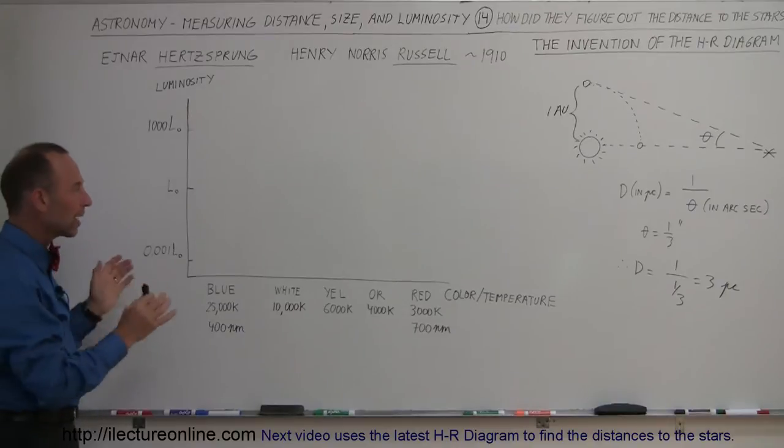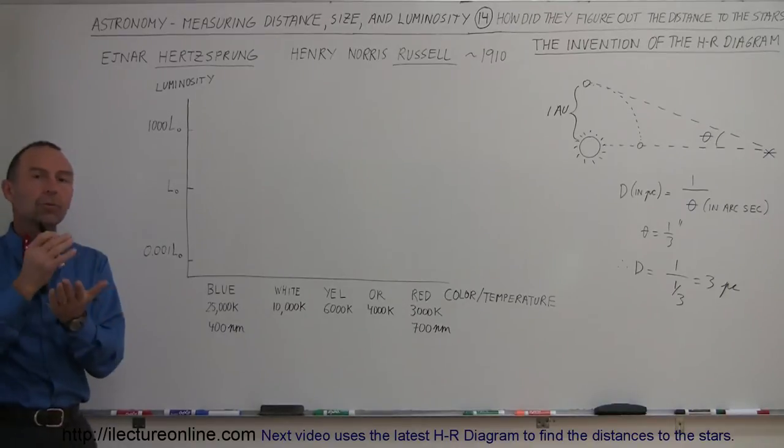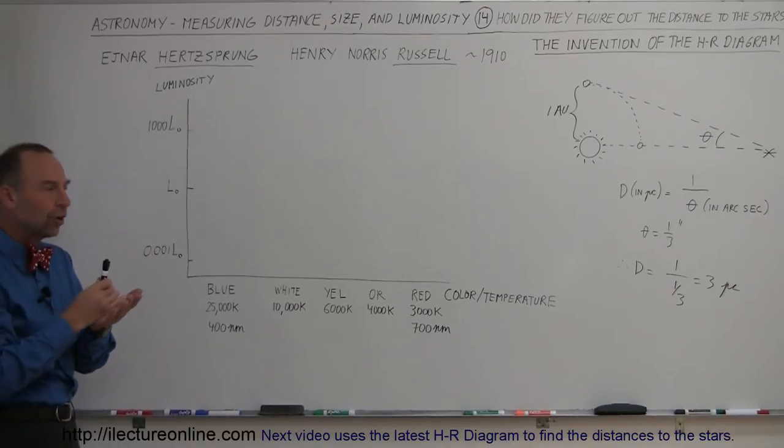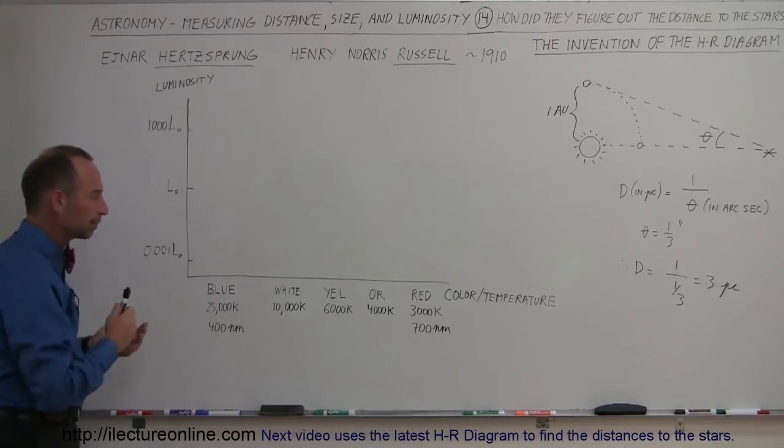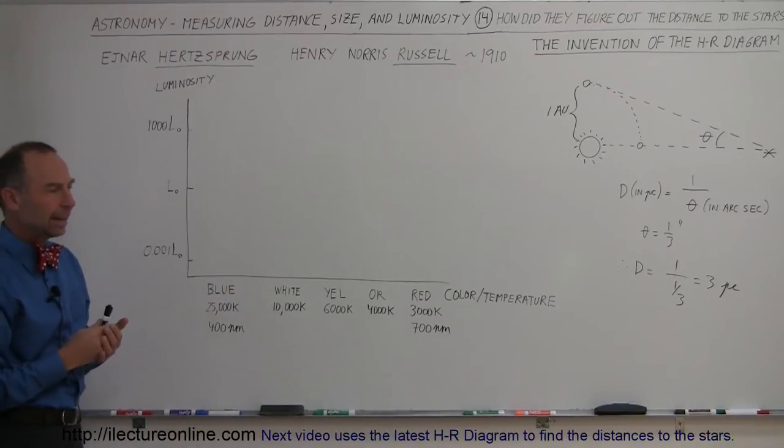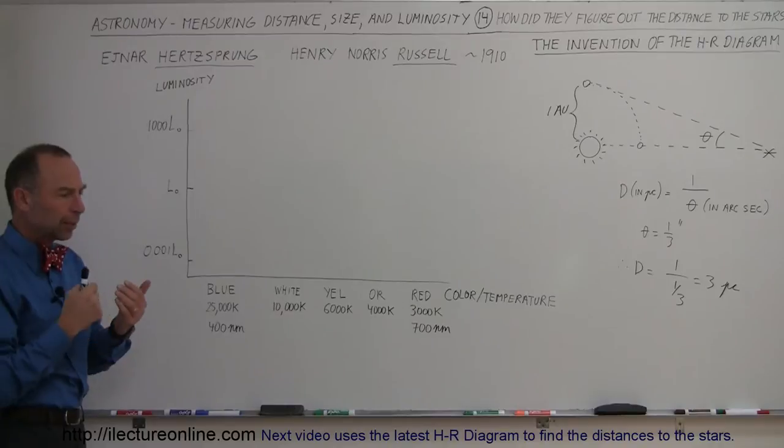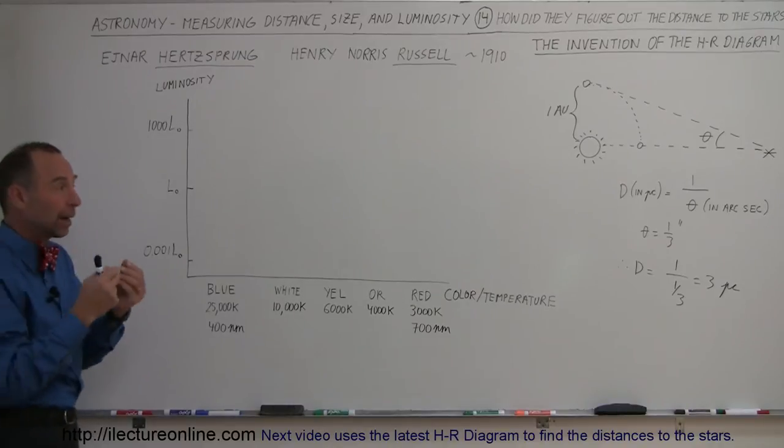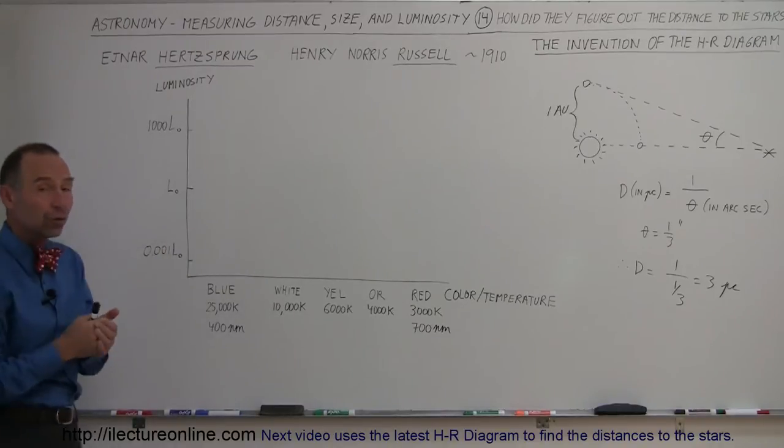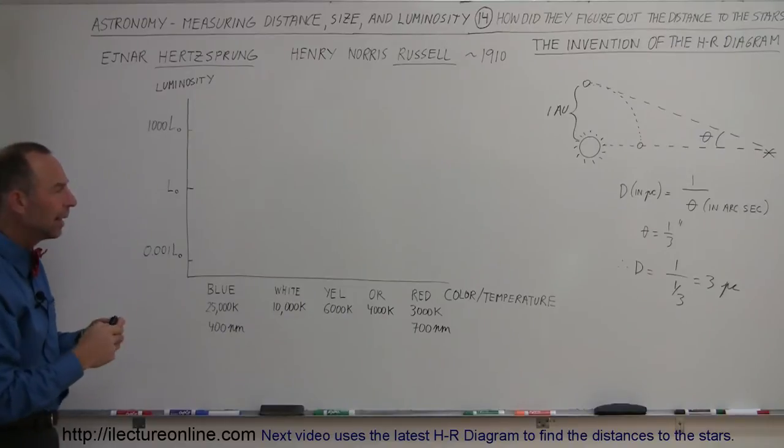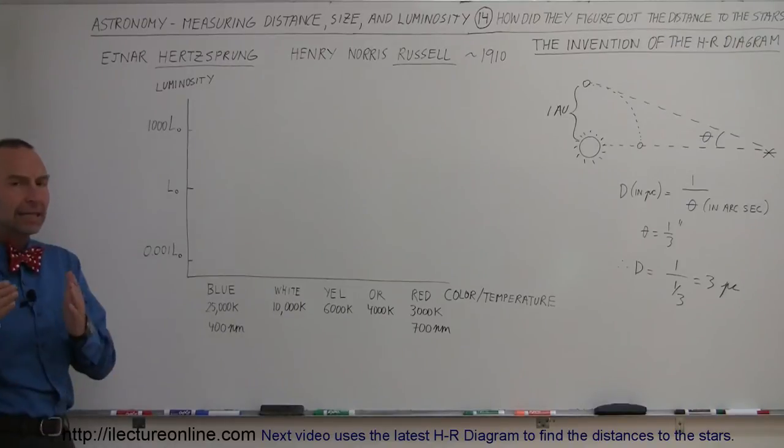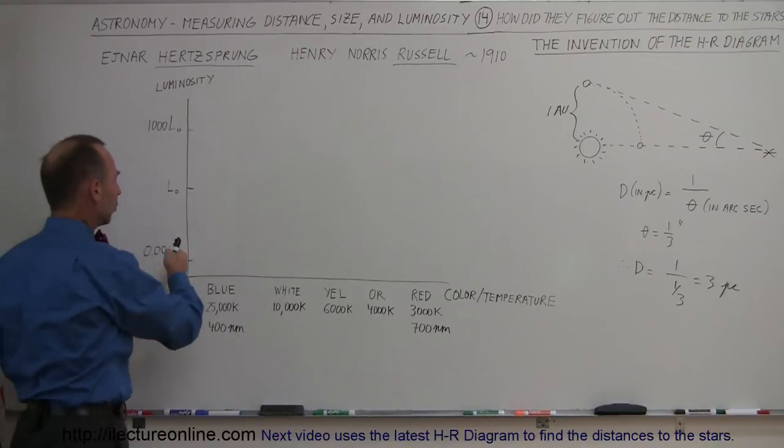They began to come up with this idea to try and plot the actual luminosity, the actual brightness of the stars with respect to their color. They were able to figure out the actual brightness of the stars by measuring the distance using the angle of parallax. So they did that and began to plot the results on the chart.